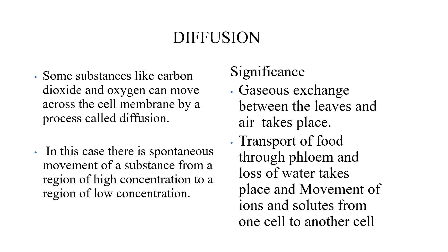Diffusion. Some substances like carbon dioxide and oxygen can move across the cell membrane by a process called diffusion. In this case, there is a spontaneous movement of a substance from a region of high concentration to a region of low concentration. So movement of CO₂ and O₂ takes place through the plasma membrane, from high concentration to the region of low concentration.